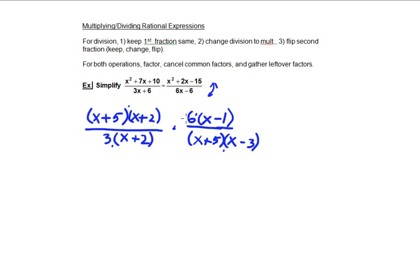The x plus 5, x plus 2, 6, and x minus 1. These are all multiplied. So we are allowed to cancel.